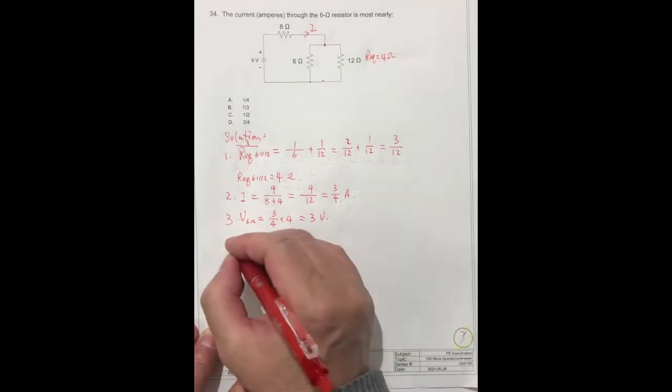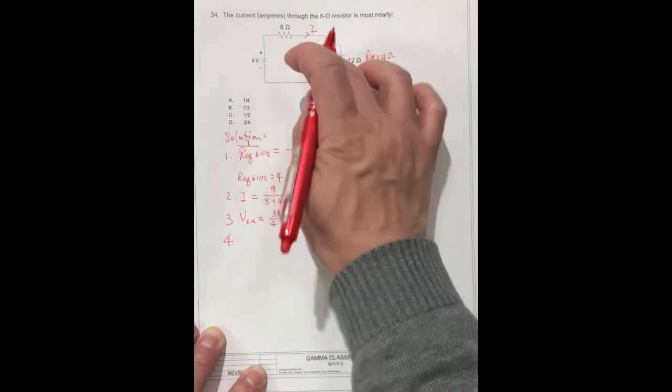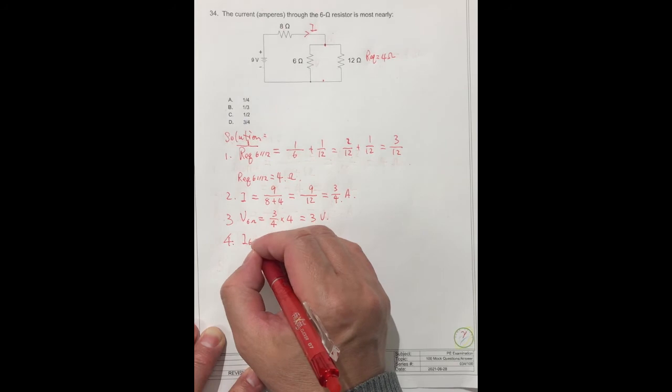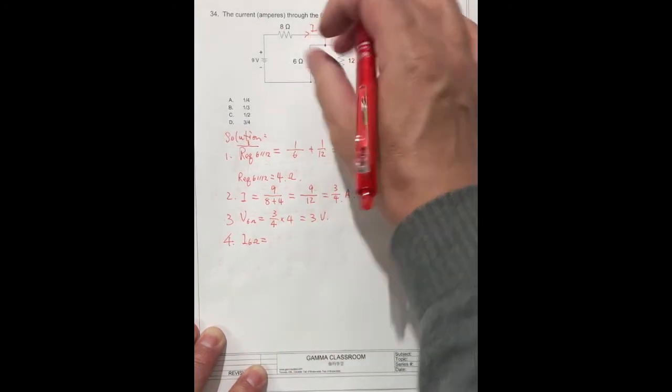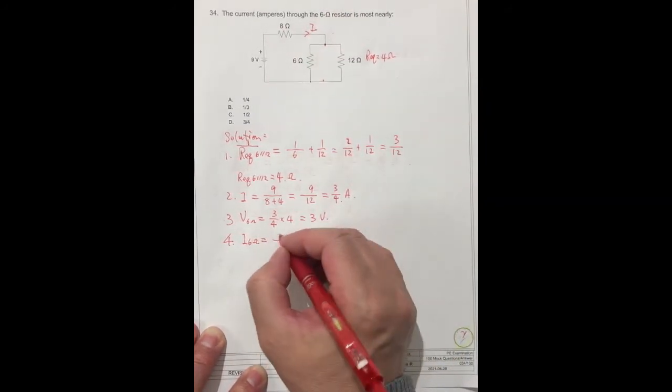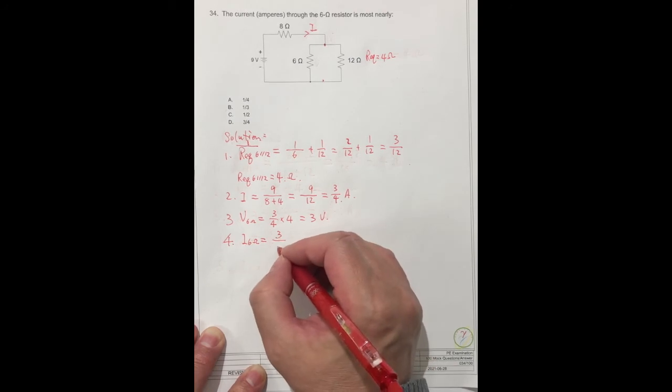Now the current I is equal to 3 over 4 times 4 divided by 6, which equals one half.